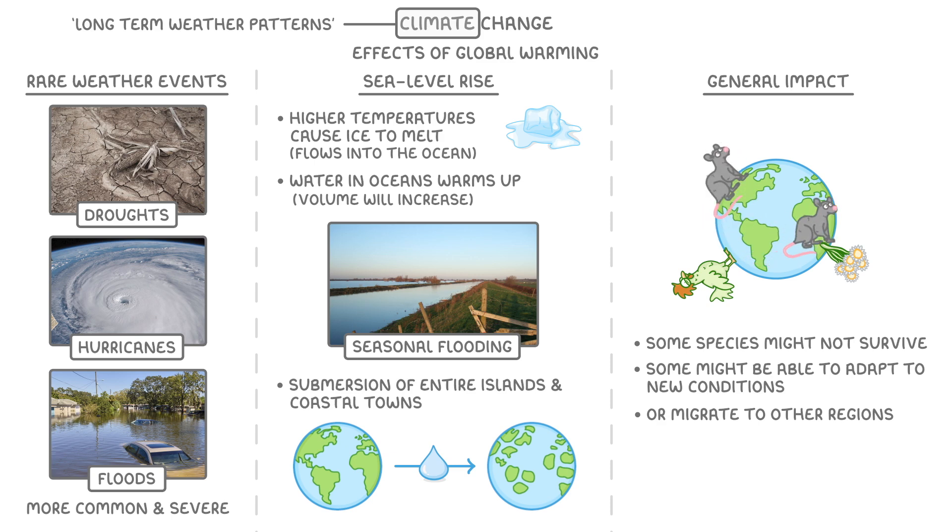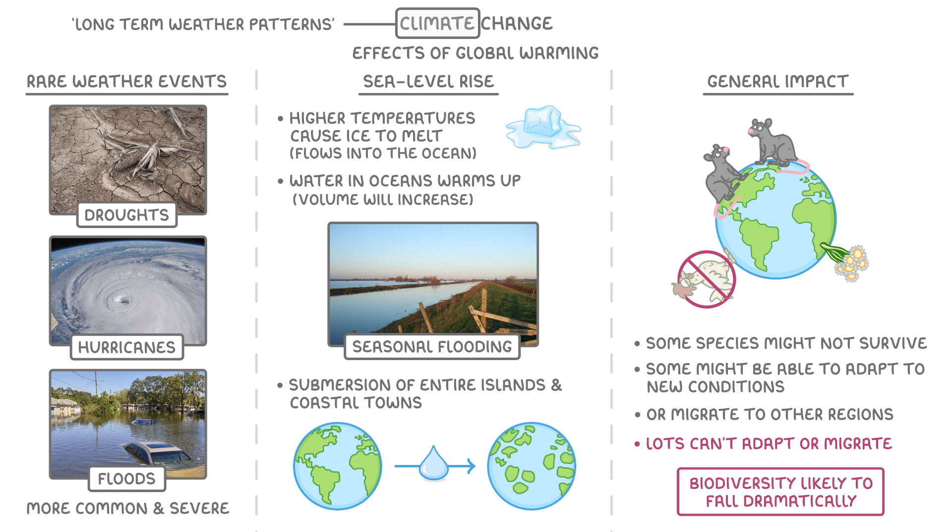For example, lots of species are slowly moving towards the poles where it's cooler. Unfortunately though, lots of species can't adapt or migrate fast enough. And biodiversity is likely to fall dramatically in the next few decades.